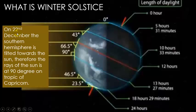What is winter solstice? On 22nd December, the Southern Hemisphere is tilted towards the sun, therefore the rays of the sun are at 90 degrees on the Tropic of Capricorn. This is winter solstice in the Northern Hemisphere and summer solstice in the Southern Hemisphere.